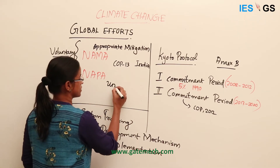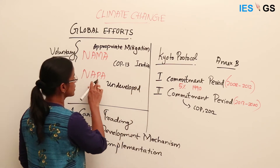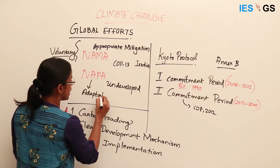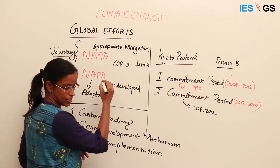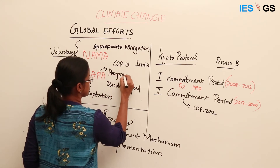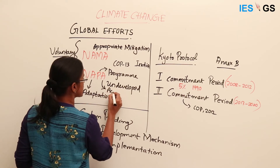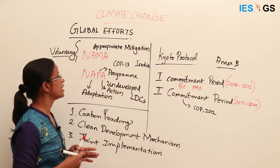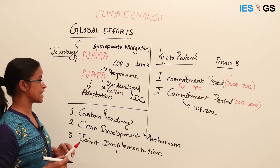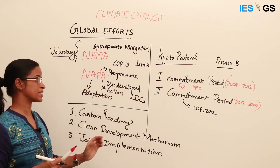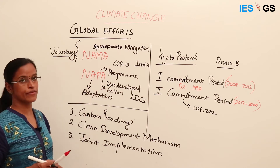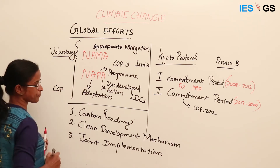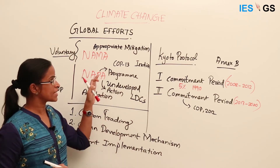NAPA is for underdeveloped countries, focusing more on adaptation. NAPA stands for National Adaptation Programme for Action. Mostly underdeveloped and least developed countries, commonly called LDCs, are at risk from climatic disasters caused by global climate change, so they need greater help in adapting. They come up with a National Adaptation Programme for Action, and this was agreed at the Bali COP.